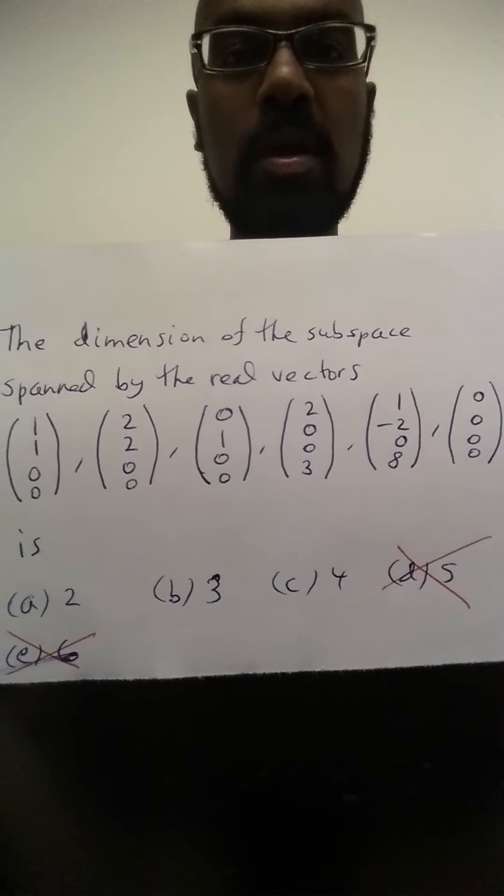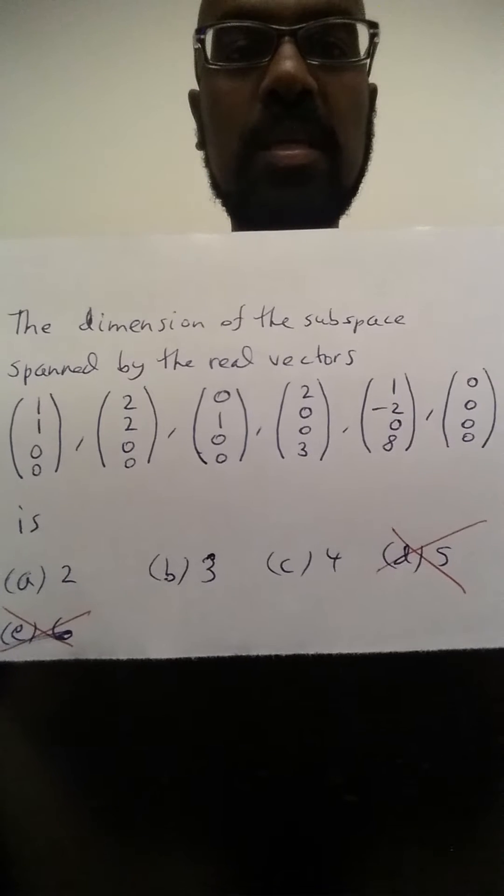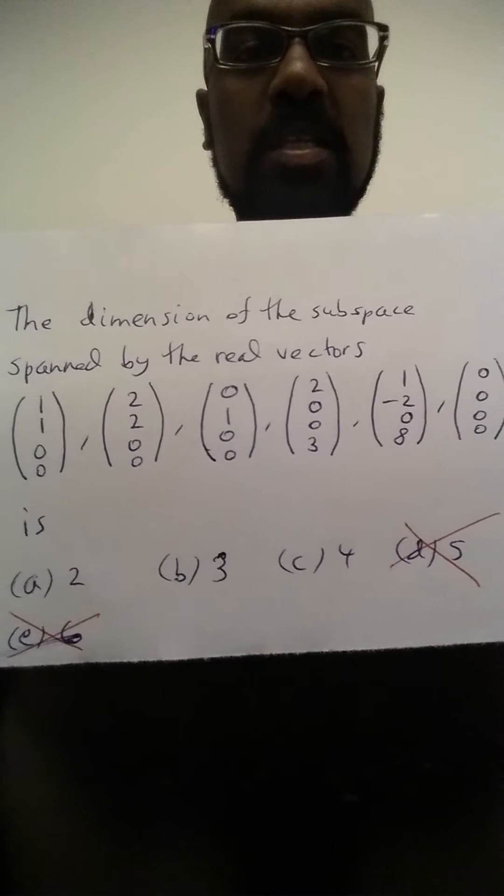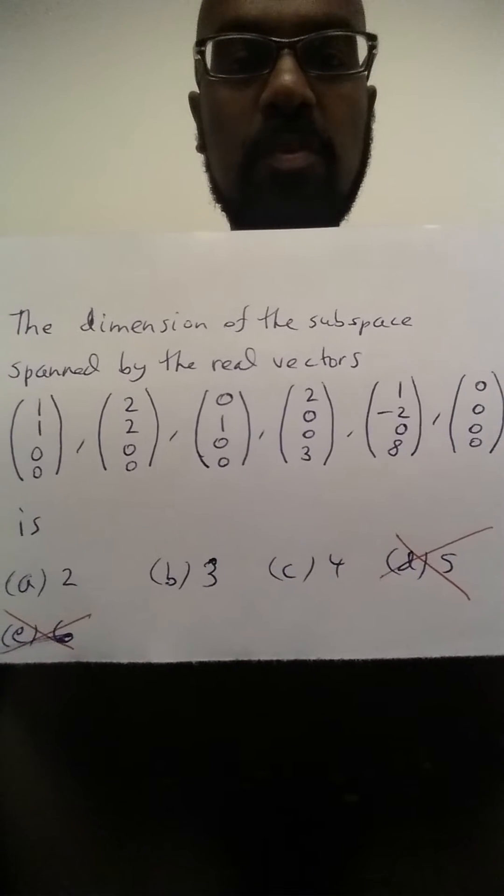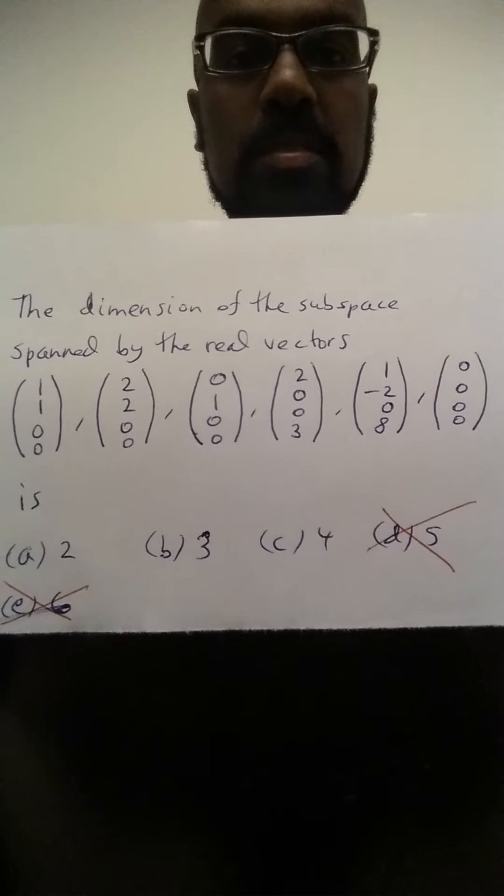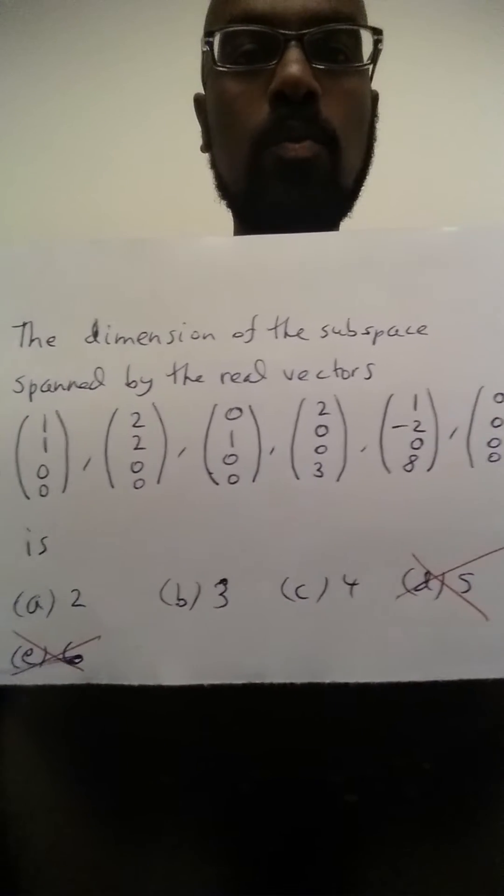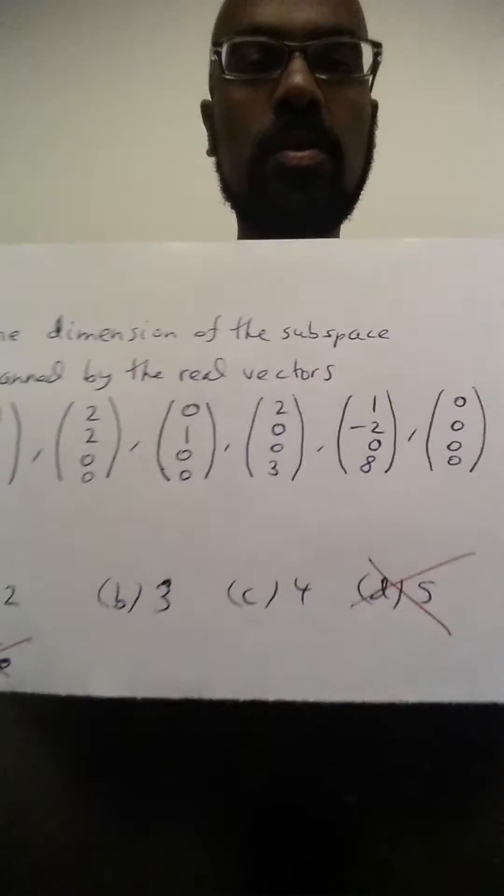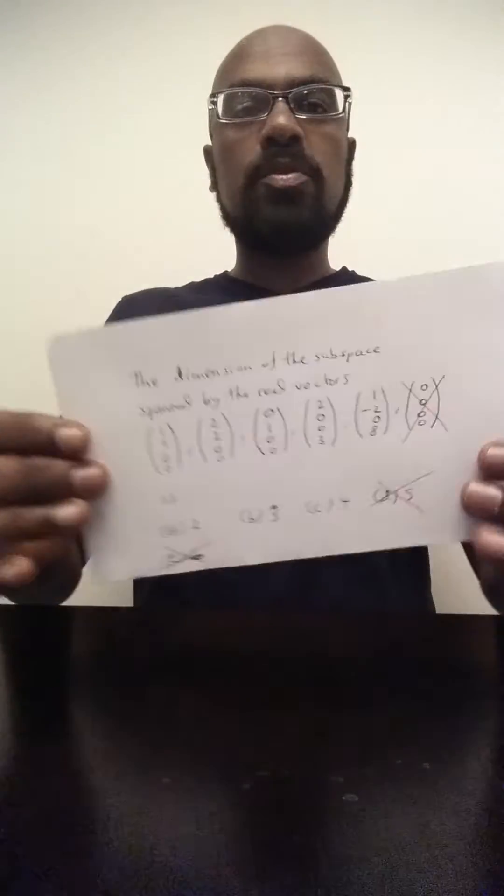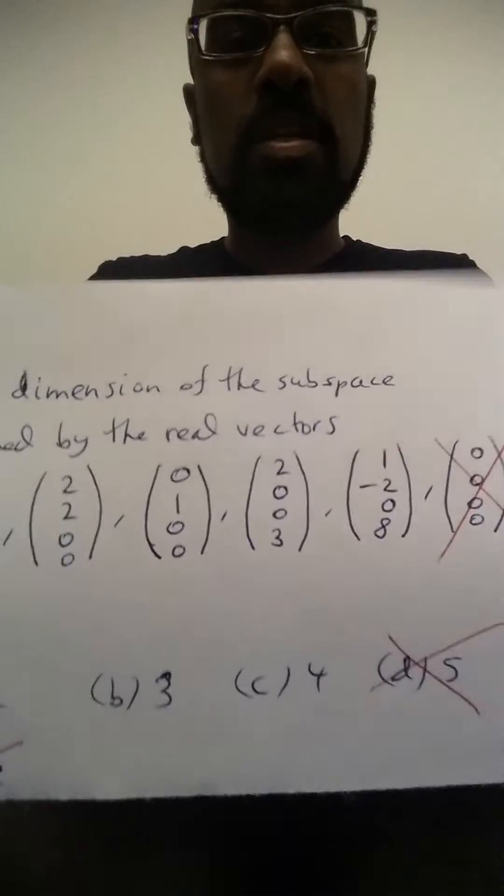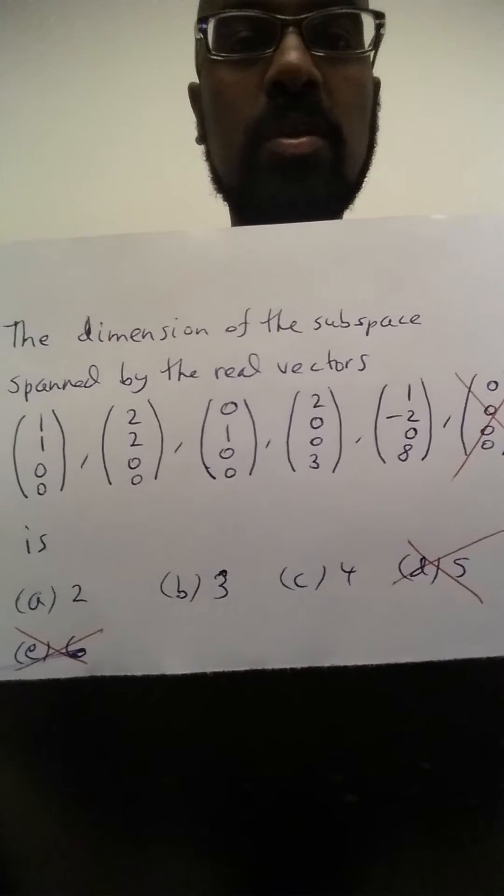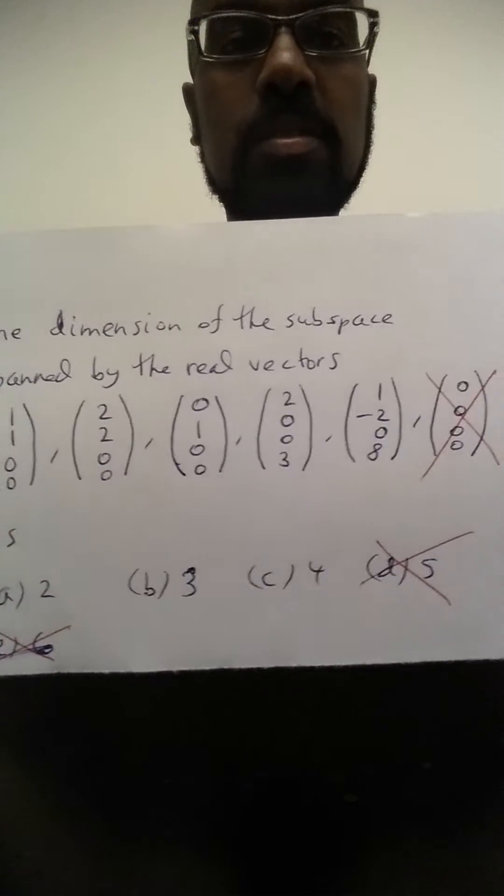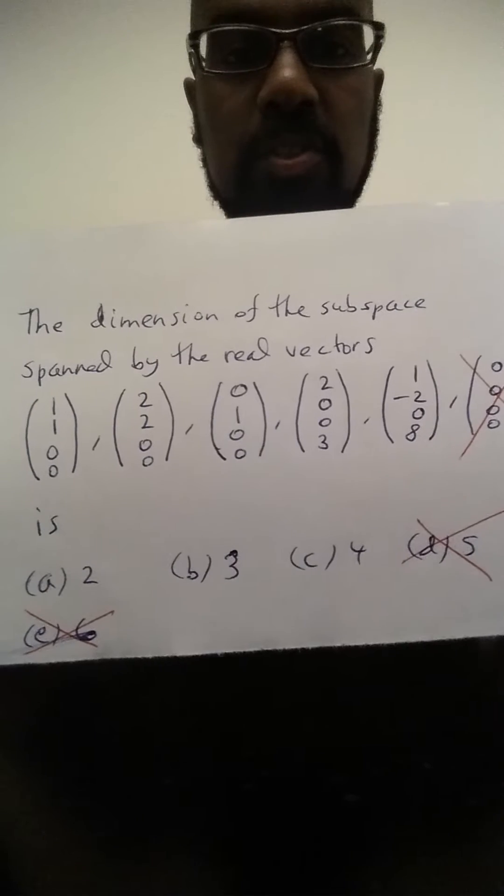Now let's hunt for a minimal set of linearly independent vectors among these vectors that we have because that can give us a basis for the subspace spanned by these. Well, the 0 vector will not contribute into linear independence whatsoever, and the reason is because it is always a linear combination of other vectors using 0 as scalars. So let's get rid of that.